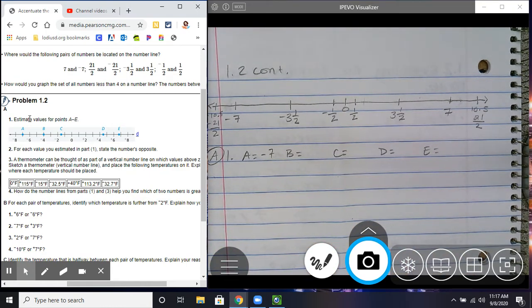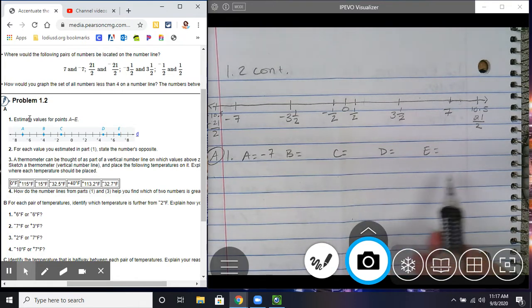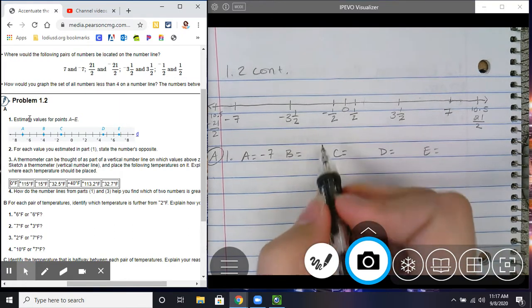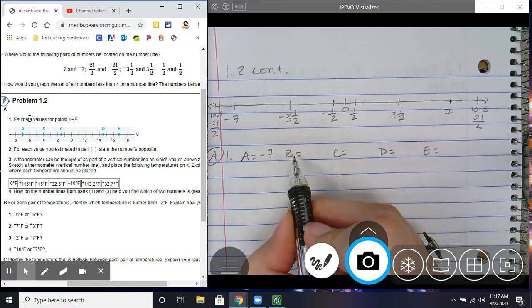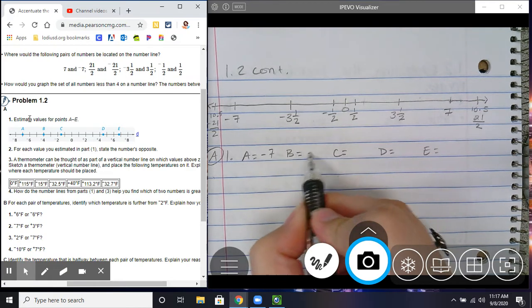Feel free to pause this video at any time. It would be really nice if you could try to fill these in on your own, and then watch the video, and then kind of catch up with me. Then we have point B, which is sitting right on negative 4. So, that is going to be negative 4.